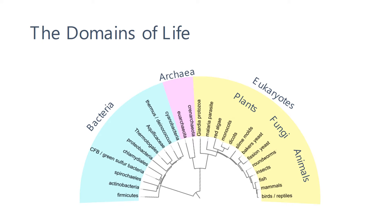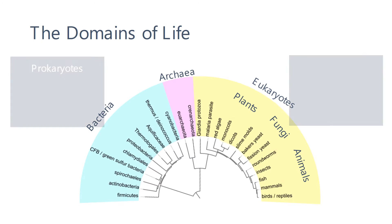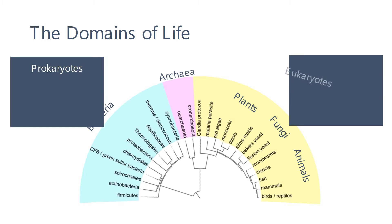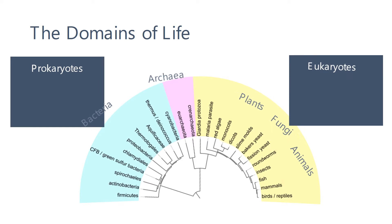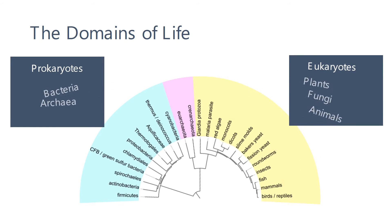These three domains can be grouped into two larger groups: the prokaryotes, containing the bacteria and archaea, and the eukaryotes, containing the plants, animals, and fungi.